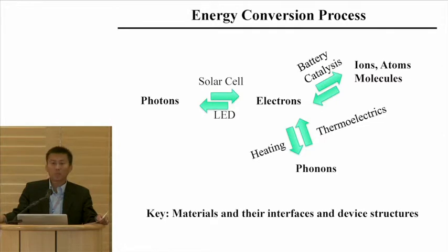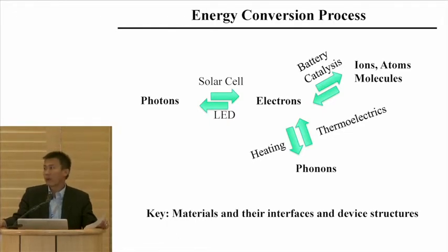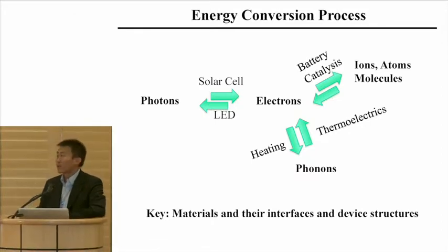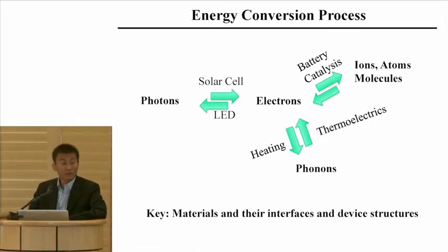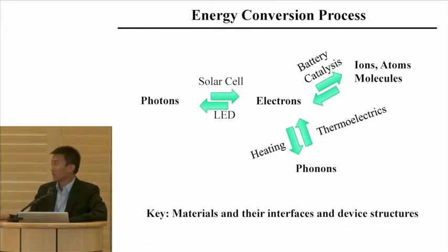An energy conversion process involves, nearly all the time, thinking about how these energy carriers take the energy and convert it into something you are interested in. For example, this is where solar cells and LED come in — electrons to photons, photons to electrons. And electrons and ions, atoms, and molecules — that's for the batteries, for the fuel cell, for the catalysis.